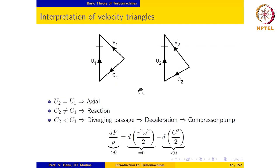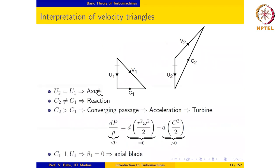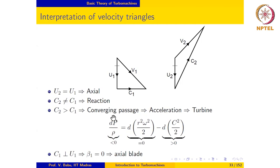In the next example, we are given velocity triangles at the inlet and exit of a rotor with u1 equal to u2, confirming an axial machine. Since c2 is not equal to c1, it is a reaction machine. In the pressure equation, dr is zero and c2 is greater than c1, so dc is positive, making dp negative — the pressure decreases in this passage. Since c2 is greater than c1, the blade passage is a converging passage where flow accelerates and pressure decreases. Therefore, this is the rotor blade of a turbine.